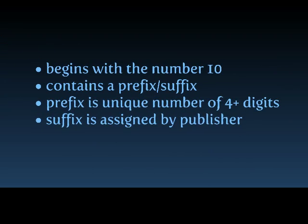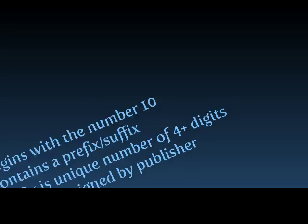All DOI numbers begin with a 10 and contain a prefix and a suffix separated by a slash. The prefix is a unique number of four or more digits assigned to organizations. The suffix is assigned by the publisher and was designed to be flexible with publisher identification standards.